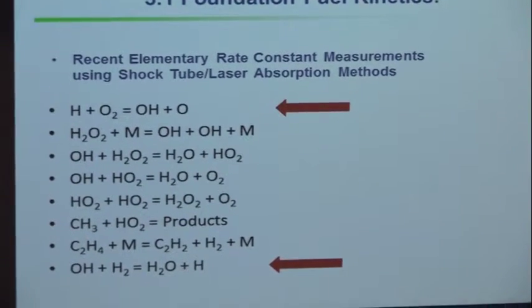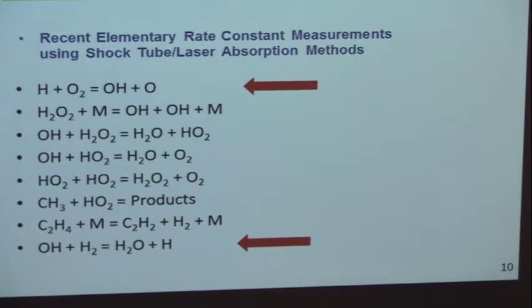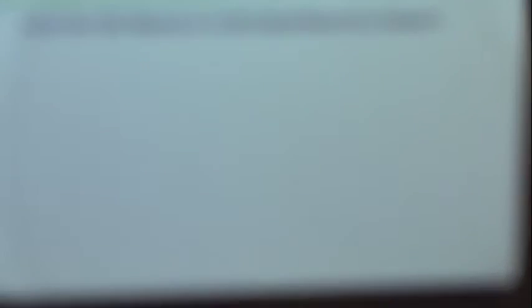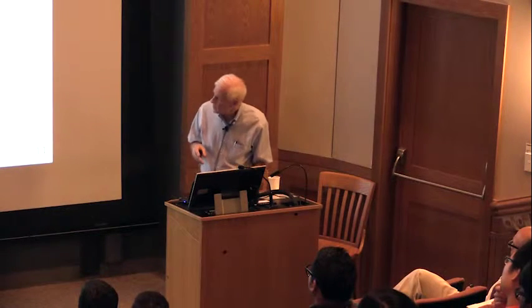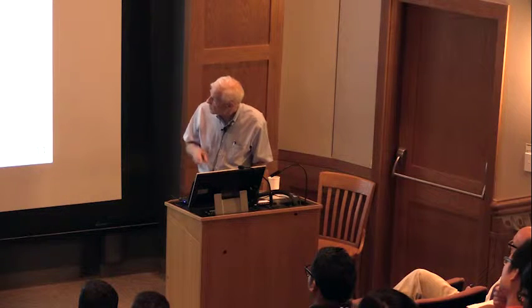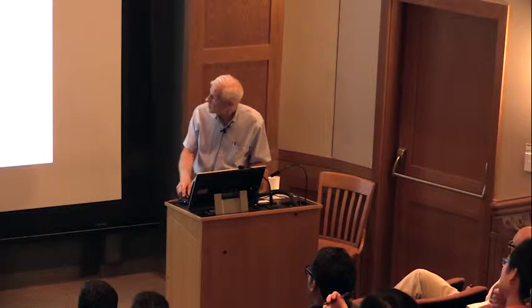Here are two examples I'll show you, including the chain-branching reaction that's so important. How do we measure these individual reaction rates? It's a two-step process: we design experiments using sensitivity analysis and a Chemkin code, playing with temperature, pressure, mixture, and what we're going to measure. Through sensitivity analysis, we find how to best isolate the reaction we care about. We use the shock tube for step heating and laser absorption for species detection.